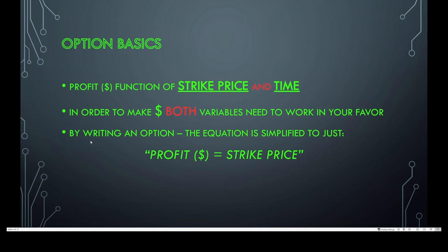But by writing an option you can remove one of these variables and really just turn that equation into simply profit equals the strike price. We've taken time out of the equation working against us and now it actually works for us. We are essentially picking a strike price and having time work for us.